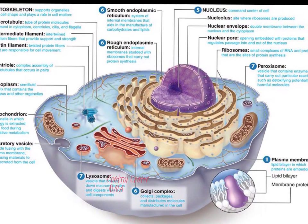We've got the nucleolus in the middle — this is a dark dot. This is where ribosomes are produced. Ribosomes are another one of the organelles. They're these little dots that you see here on the endoplasmic reticulum, and some of them are free-floating out in the cell on their own. The ribosomes create proteins, and the ribosomes themselves are made in the nucleolus inside the nucleus.